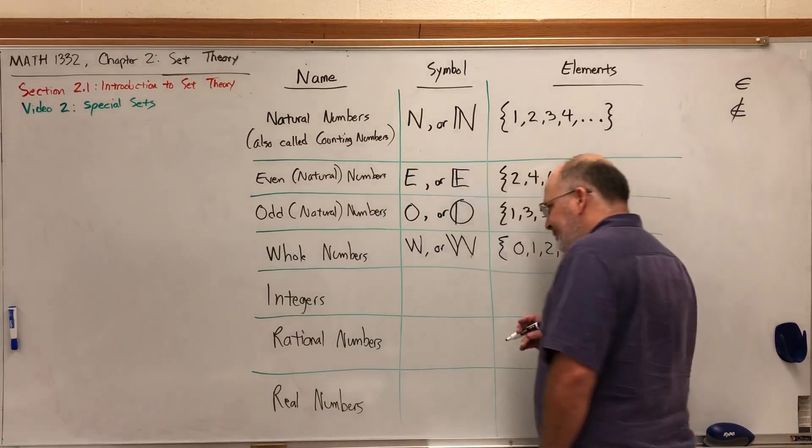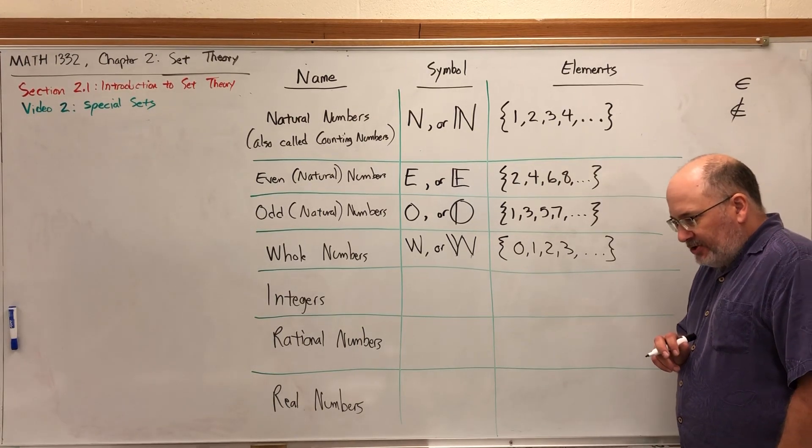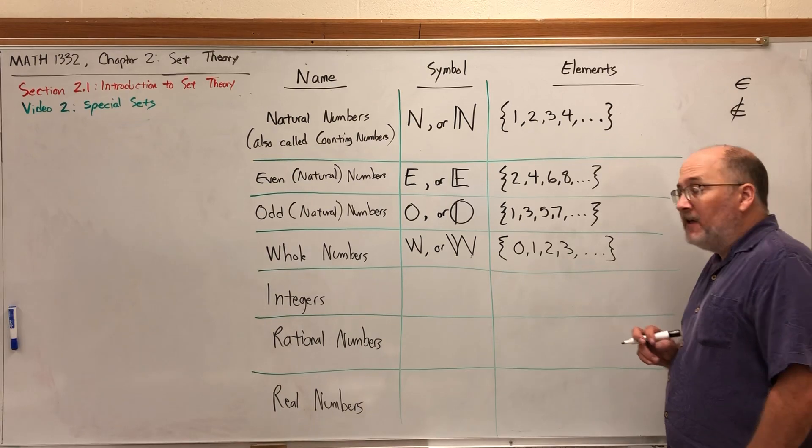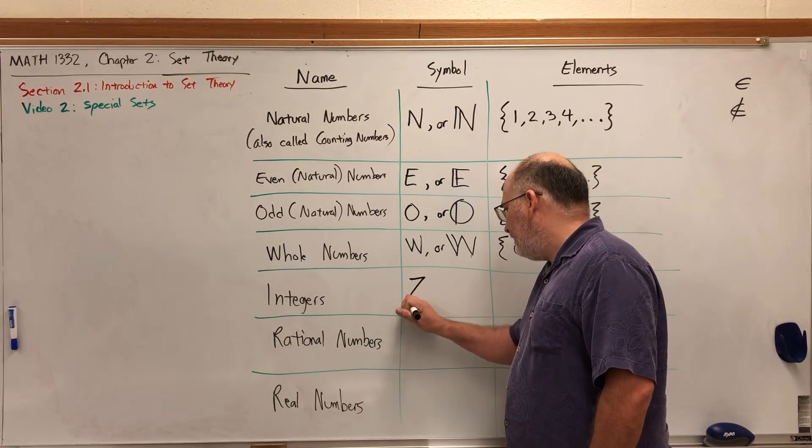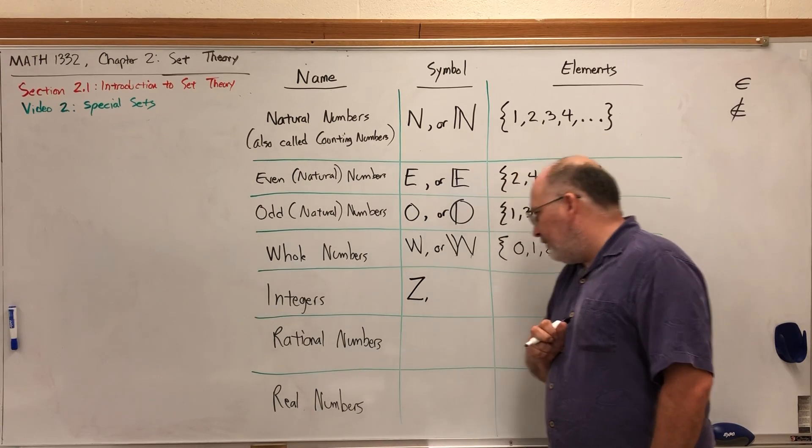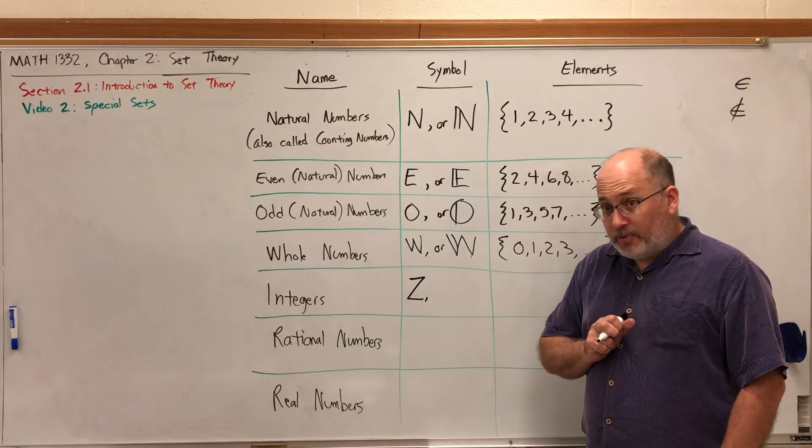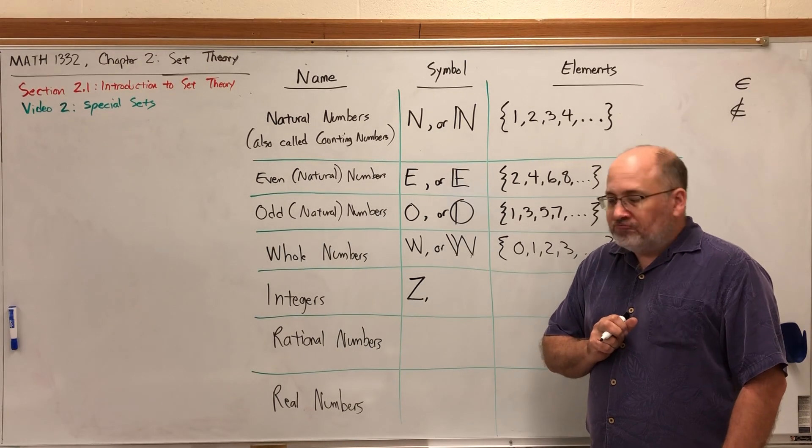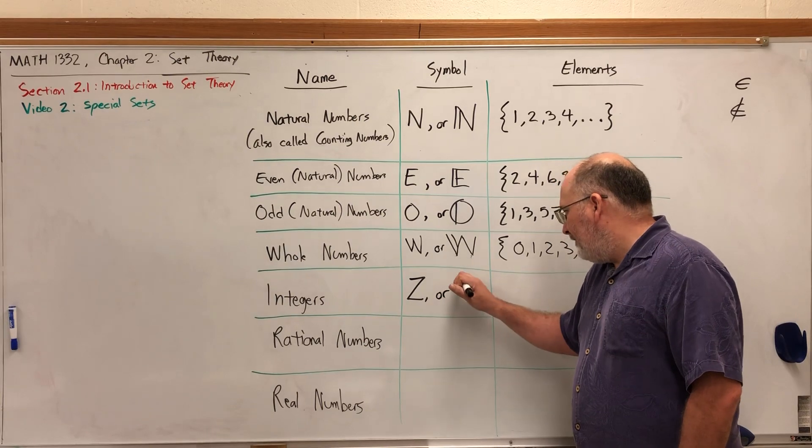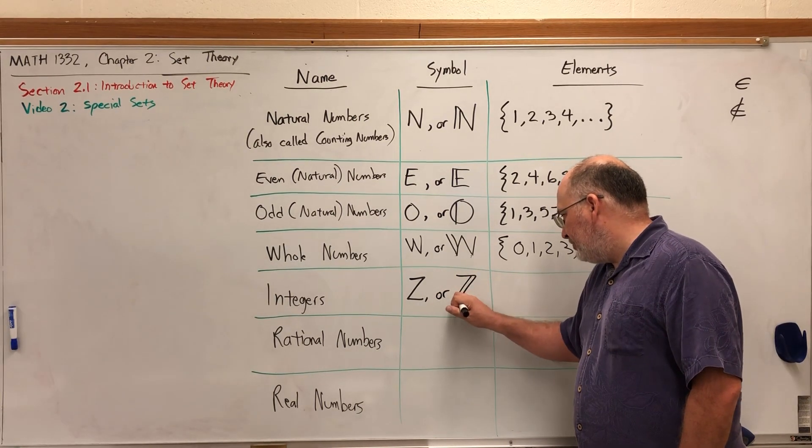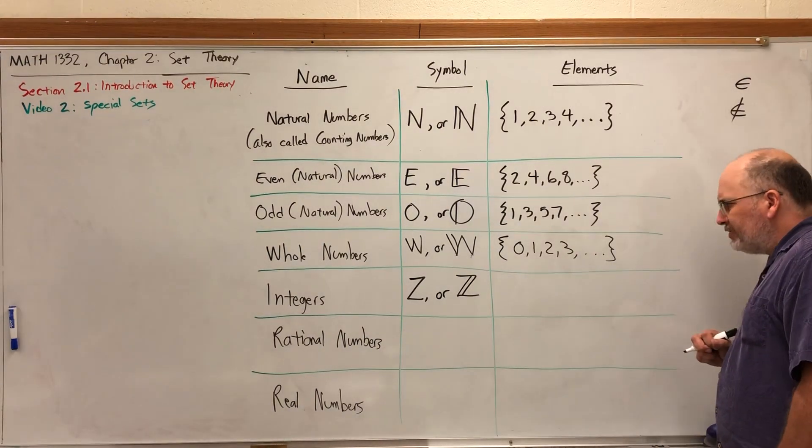The letter for the integers is not a capital I. The letter for the integers is actually a capital Z, because of the German word for integers. I've always seen it written as a double script Z.